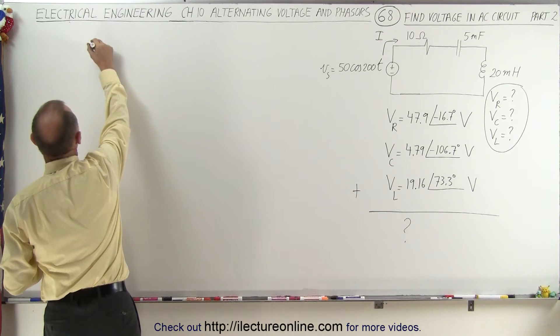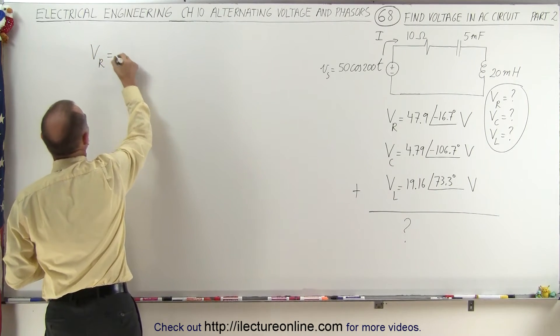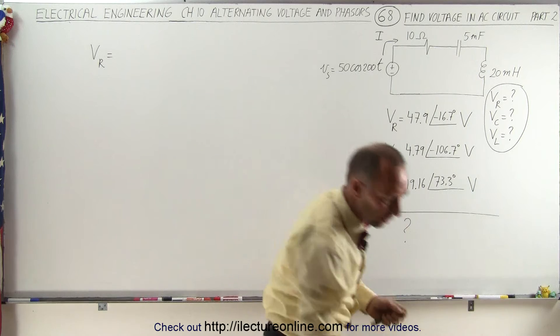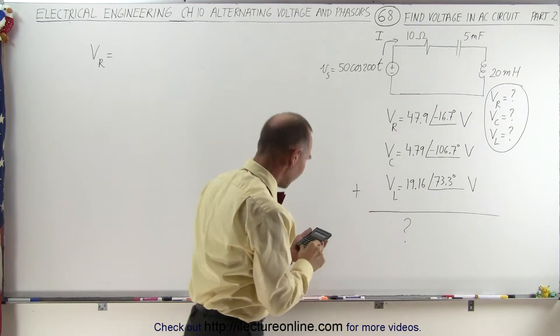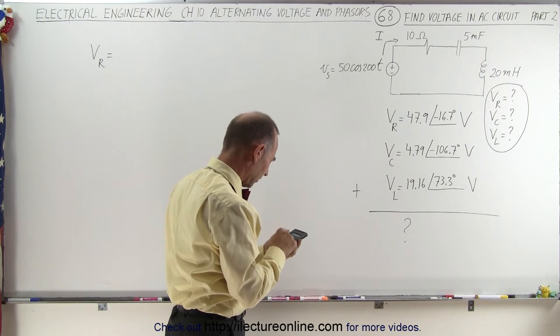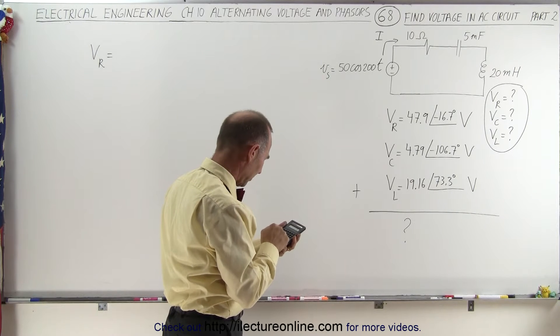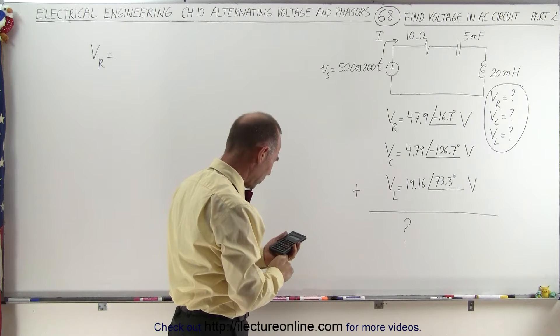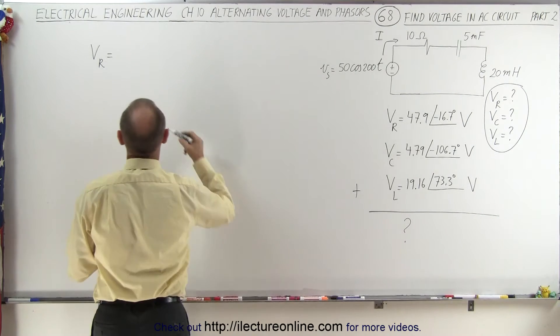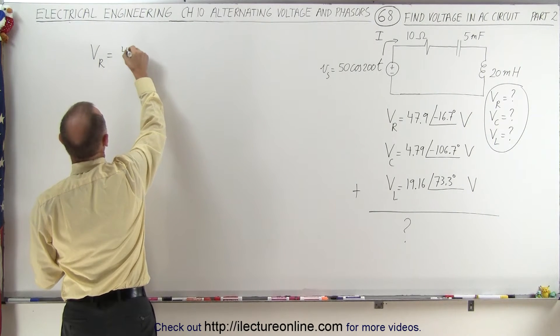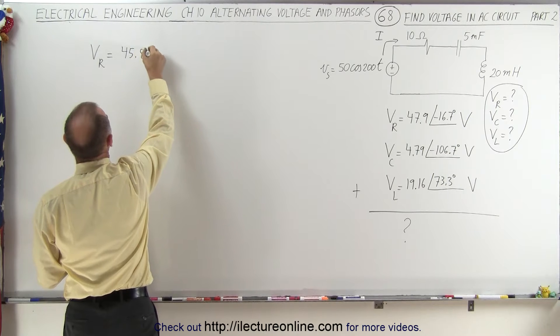So in that case we can say that V sub R can also be written as follows. Let's go ahead and take the cosine of 16.7 degrees, and multiply that times 47.9, and we get 45.88 volts in the real part.